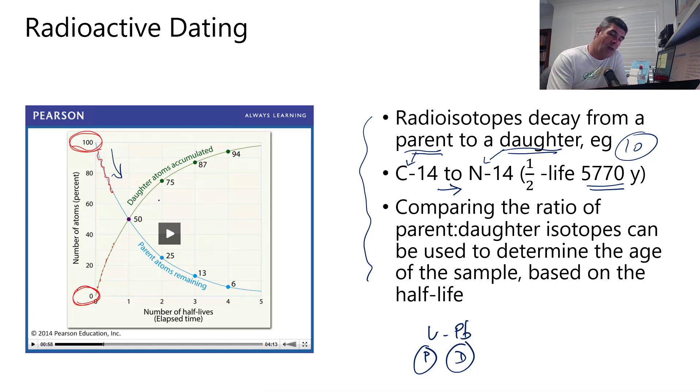At the same time, the amount of daughter atoms are accumulating. So after one half-life, you have 50% of your parent left. You have 50%, which are now daughters. In one more half-life, you're down to 25% of the parent. You're up to 75% of the daughter. So there's this straight one-to-one ratio of parent to daughter. And it's the comparison of these different atoms or isotopes that allows us to do some dating.